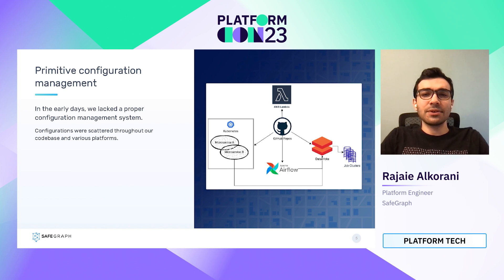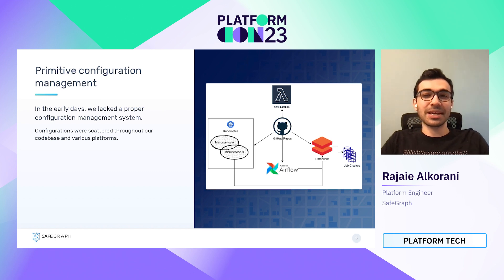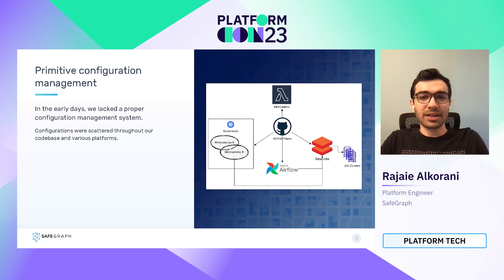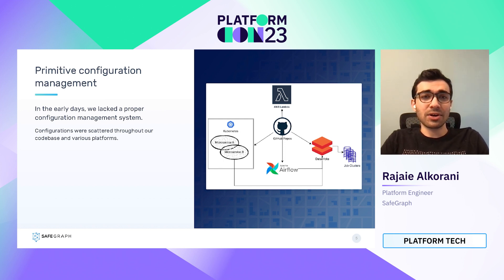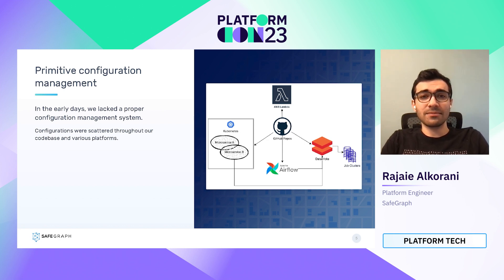So how did SafeGraph do configuration management in the early days? Well, the short answer is that we didn't really have a proper system, so our configurations were scattered throughout our code base and various platforms. We had some configs stored in Kubernetes config maps and environment variables, we had others in Lambda functions, and we had others hard-coded in our code. We also had some in Airflow's variable store, and finally, we had some parameters set as environment variables in our Databricks cluster configurations.